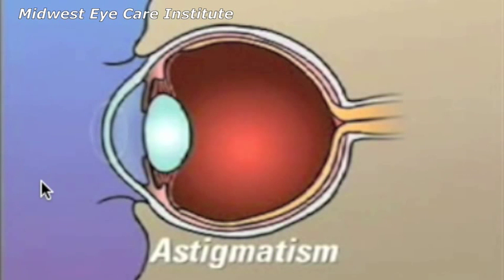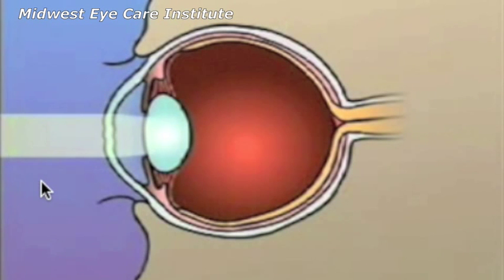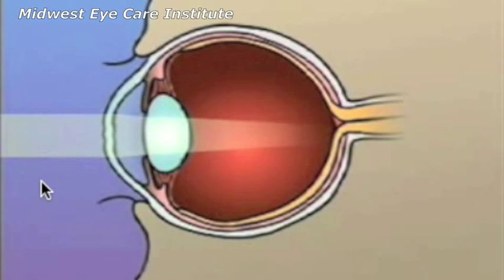Astigmatism occurs when the cornea is unevenly curved. This causes light rays to fall off-center or not to be focused properly at all.